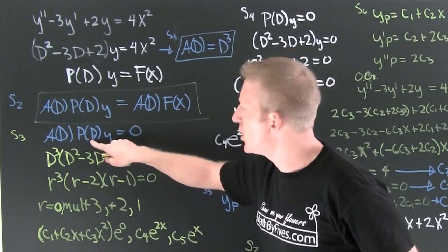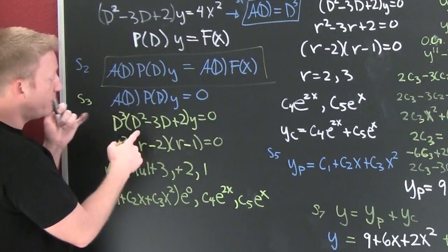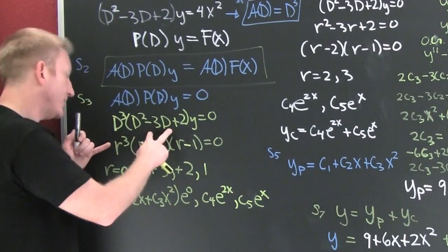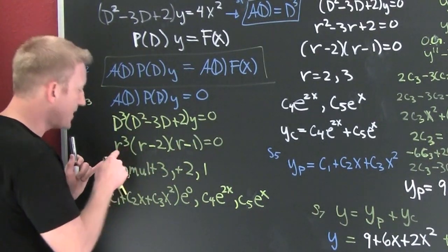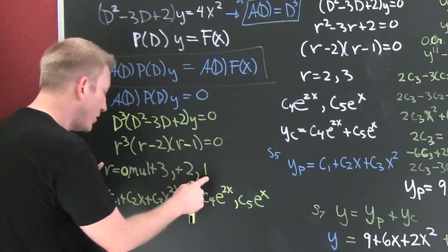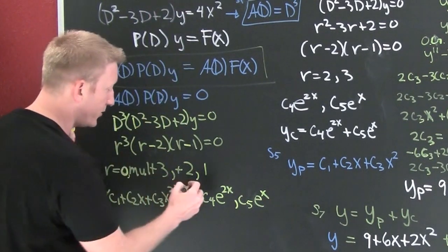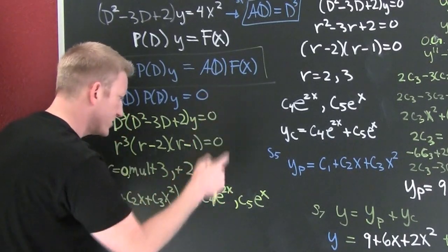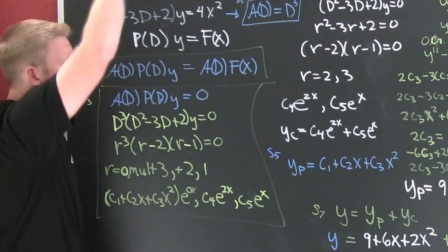Step three: we need to solve the resulting equation and find our solutions for the particular solution. We put it back in operator notation and find the characteristic polynomial. Factoring that, the roots are r = 0 with multiplicity three, r = 2, and r = 1. So the solutions are c₁ + c₂x + c₃x² (from the triple root at zero), plus c₄e^(2x) and c₅e^(x). Step three complete.